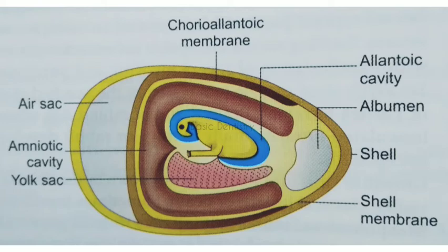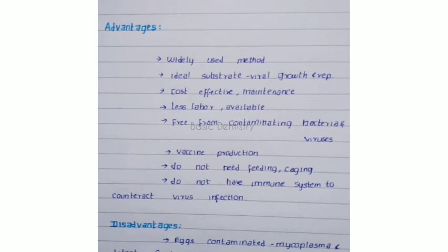In this picture, you can see the structure of the chick embryo, showing where viruses can be inoculated: the chorioallantoic membrane, amniotic cavity, yolk sac, and inside the cell membrane. The advantages of this technique are that it is widely used, cost effective, requires less labor, chicks are widely available, it is free from contaminating bacteria and viruses, and it is used for vaccine production.